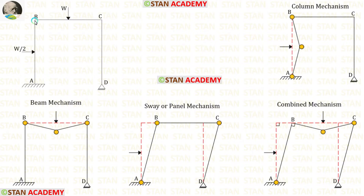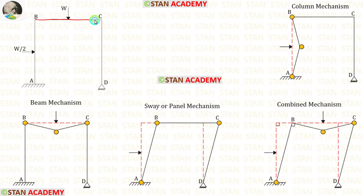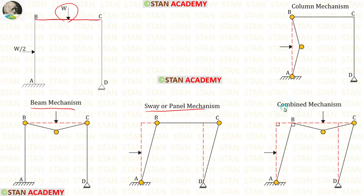In column AB we have a point load, so there will be a column mechanism. In beam BC also we have a point load, so there will be a beam mechanism. Additionally we will have a sway mechanism and a combined mechanism.